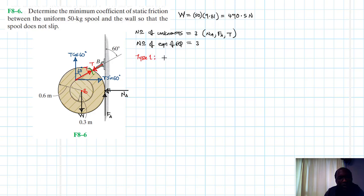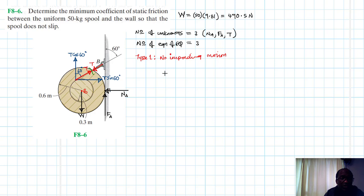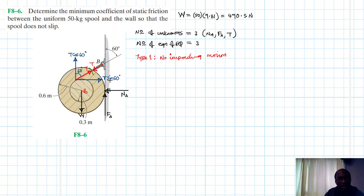This is a Type 1 problem with no impending motion. We are asked to find the minimum coefficient of static friction, so we solve using the equilibrium equations to find FA and NA, then use FA equals mu_s_min times NA to find the minimum coefficient.